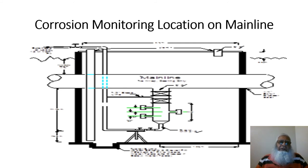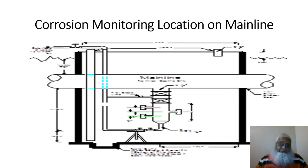This slide shows the corrosion monitoring location on the main gas or oil pipeline, where a corrosion monitoring boot is installed at the bottom of the pipeline and the monitoring devices are installed into that boot. It is very critical to understand where to position the corrosion monitoring pit — you cannot simply install it anywhere you like. That is where you need a corrosion expert or corrosion consultant with experience.